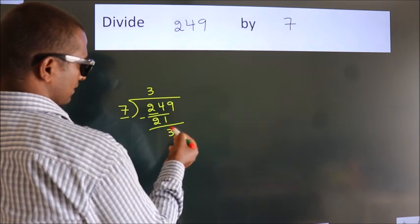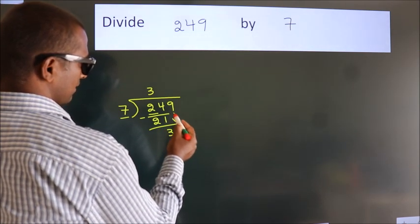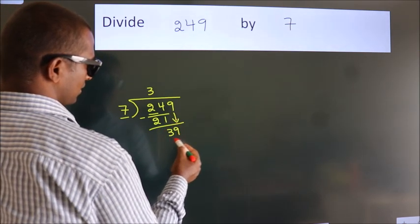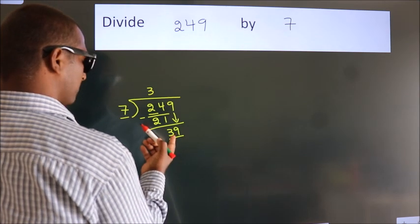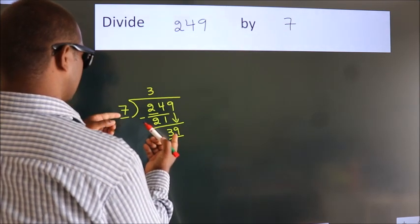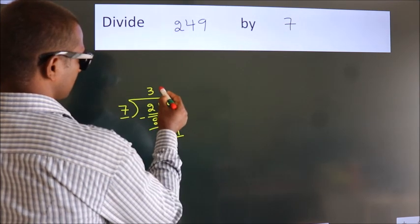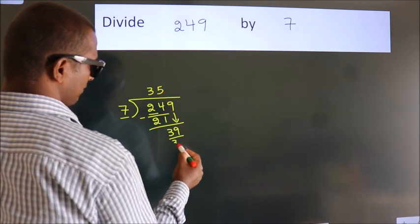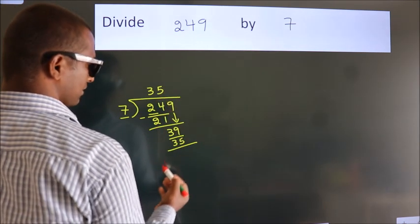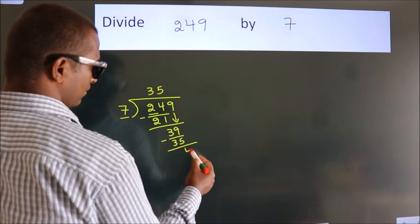After this, bring down the beside number. So 9 down, giving us 39. A number close to 39 in the 7 table is 7 fives, 35. Now we subtract. We get 4.